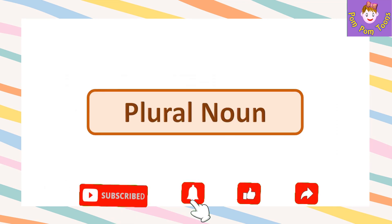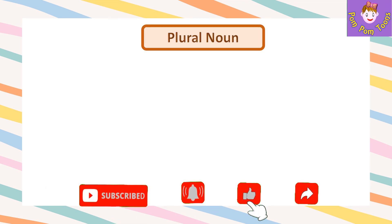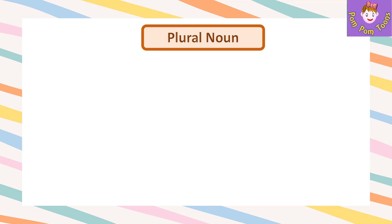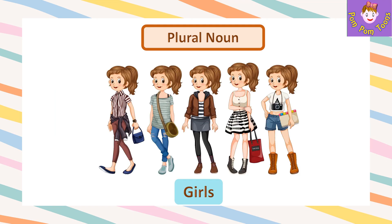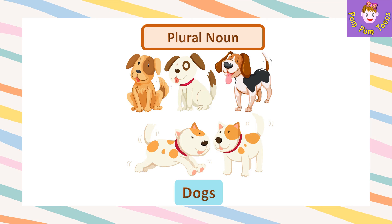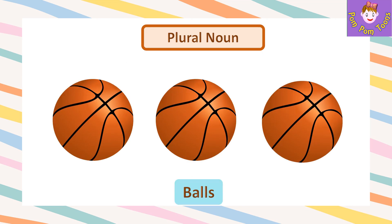Plural Noun: A noun that names more than one person, place, animal or thing is called a plural noun. For example, girls, parks, dogs, balls.